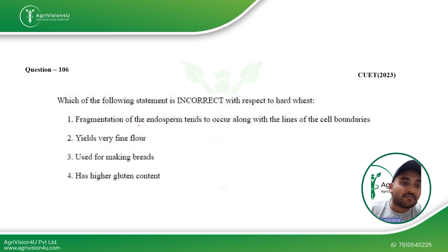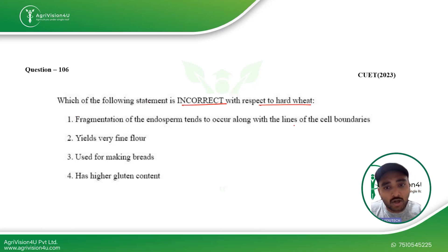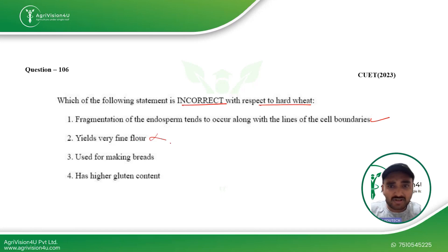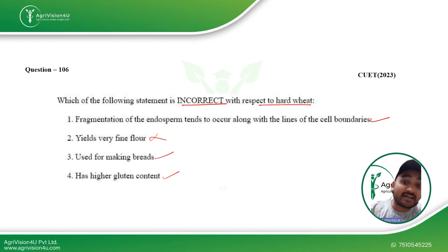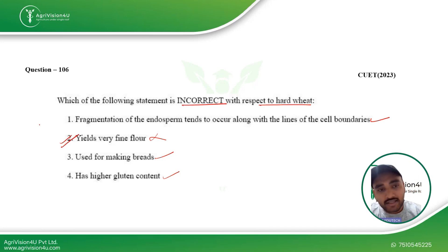The next question asks which statement is incorrect with respect to hard wheat. Fragmentation of the endosperm along cell boundaries is correct. 'Yields very fine flour' is incorrect — hard wheat gives a coarser flour. 'Used in making breads' is correct, and 'has higher gluten content' is also correct. Hard wheat has higher gluten content, used for breads, while soft wheat flour is used for muffins and cakes. So Option 2 is the answer.